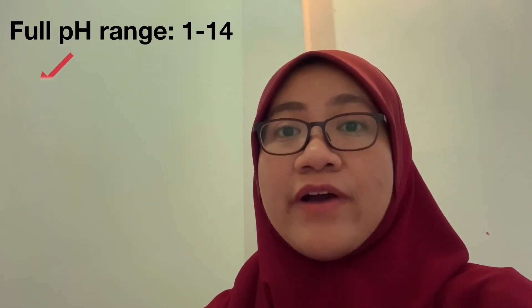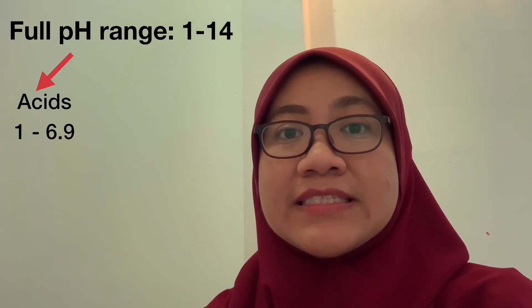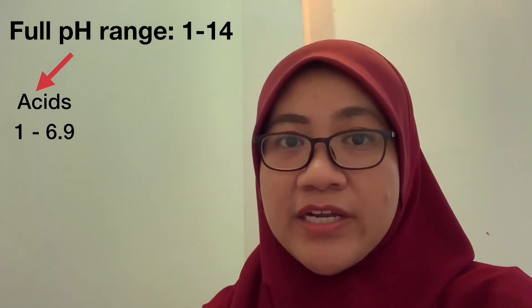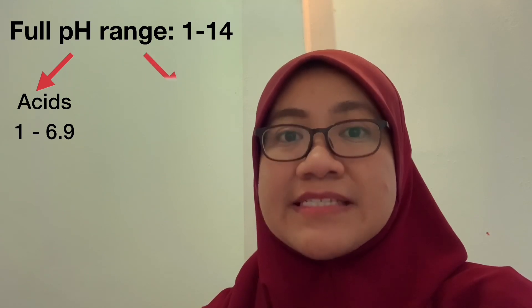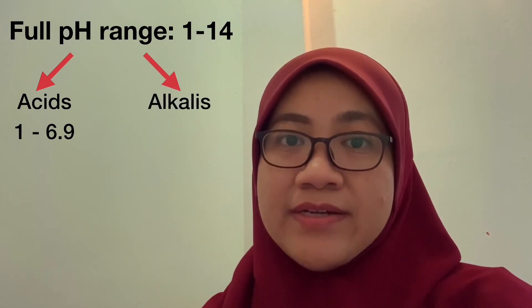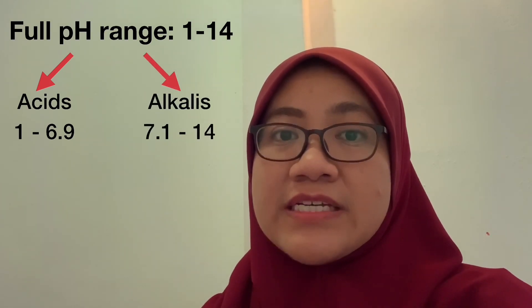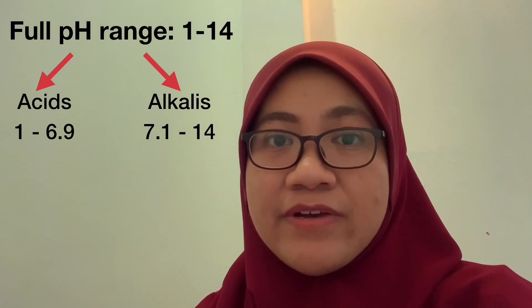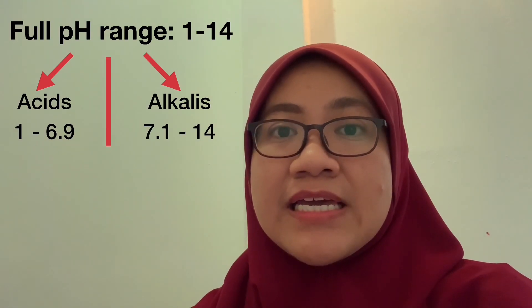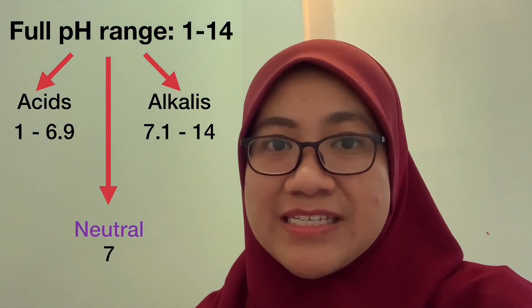pH value ranges from 1 until 14. The range of pH value for acid is from 1 until 6.9, and for alkaline it is from 7.1 until 14. pH number 7 is for neutral substances.